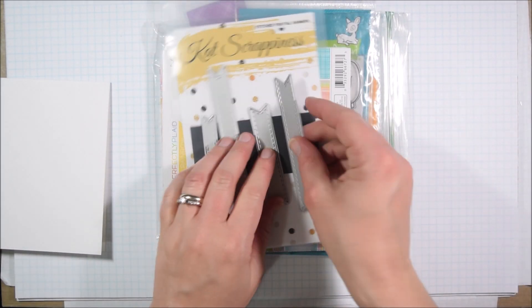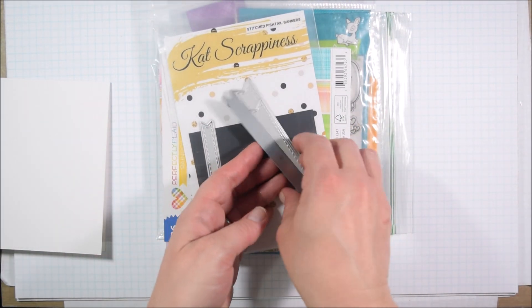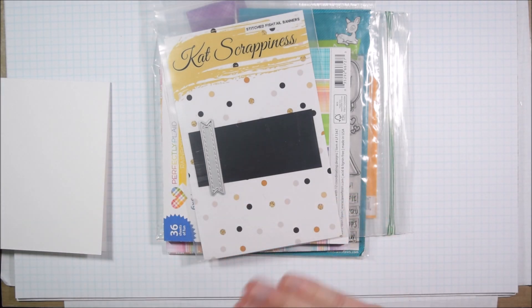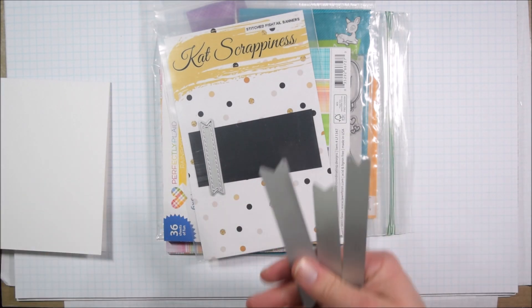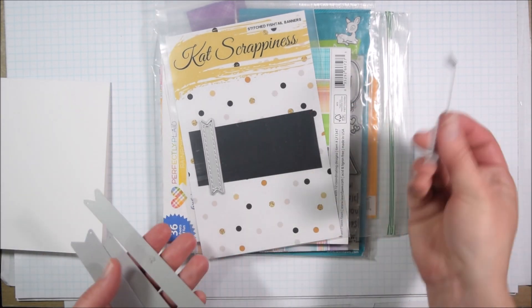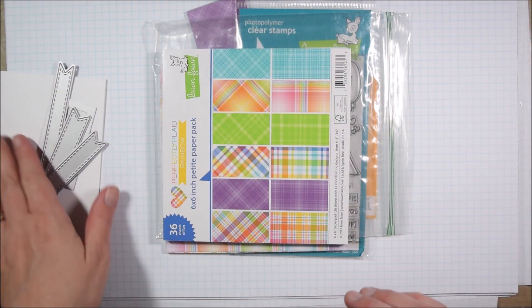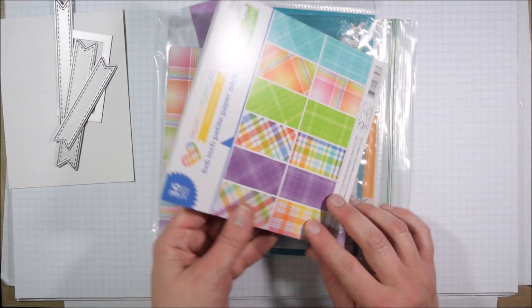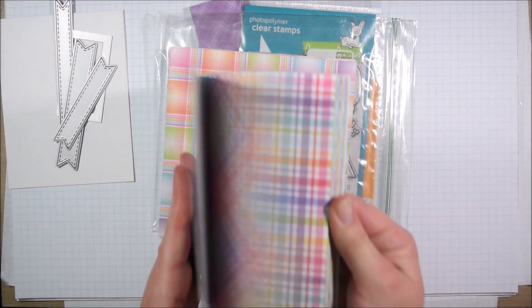I have a lot of Lawn Fawn petite 6x6 paper pads, and this one is the Perfectly Plaid Rainbow. I have a ton of scraps from it just from making a lot of cards.